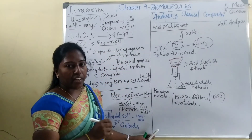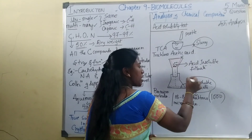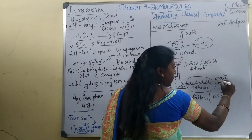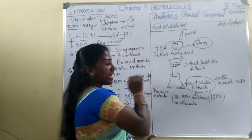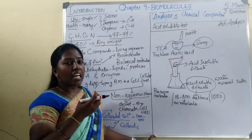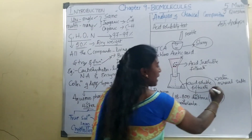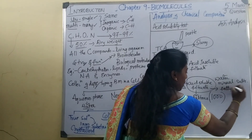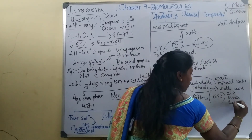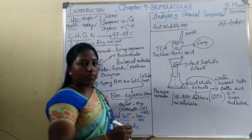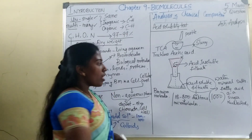The acid soluble filtrate also contains simple organic compounds like fatty acids, amino acids, sugars, and nucleotides. These biomicromolecules have a simple structure and high solubility. Coming to the acid insoluble filtrate, this contains biomolecules whose molecular weight is 10,000 Daltons or more. These are called macromolecules or biomacromolecules.